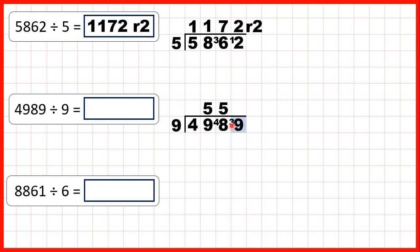So now we have 39 divided by 9. That's 4 remainder 3, because 4 times 9 is 36, but then from 36 we need to count on 3 more to get to 39. So our answer is 554 remainder 3.